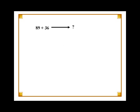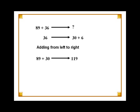It doesn't matter which number you break, but it is good to be consistent. In this case, let's break the number 36 into tens and units. 36 can be written as 30 plus 6. We then simplify the problem by first adding 89 to 30, which gives us 119, and then adding 6 to it, which equals 125.